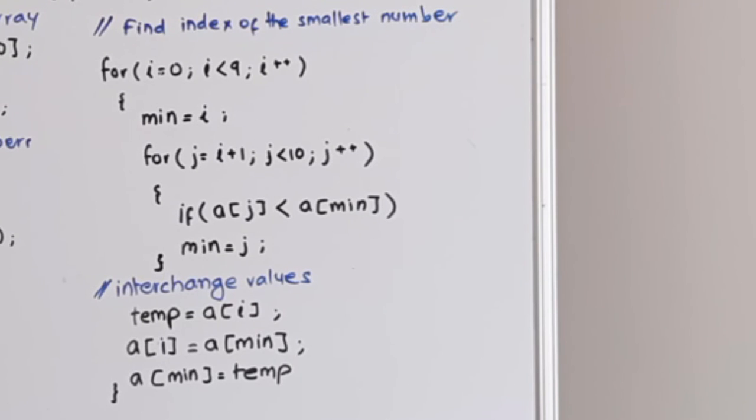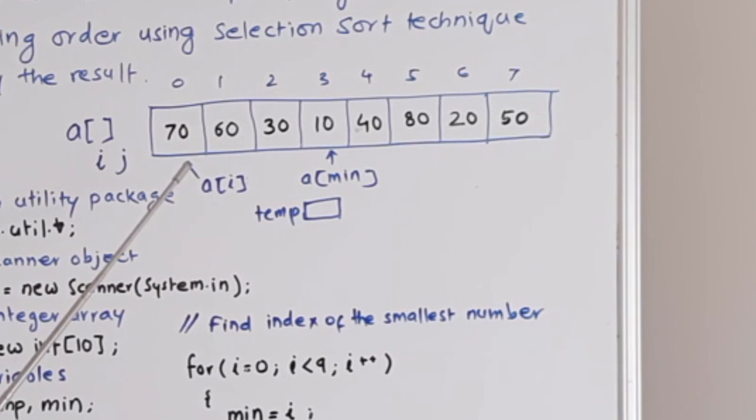Once we find that, so in this example, we have index from 0 till 7 and these are the numbers. In the current iteration this is ai and this is amin. Once we find amin, we will interchange the values of these two cells. That's what we are doing here. We will use an integer variable named temp.